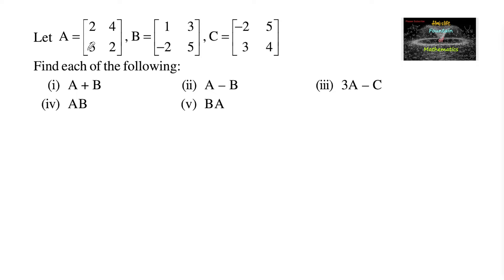Let A equal to matrix 2 4 3 2, B equal to 1 3 negative 2 5, and C equal to negative 2 5 3 and 4. Find each of the following.